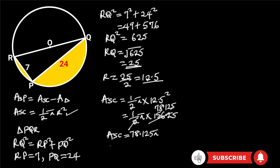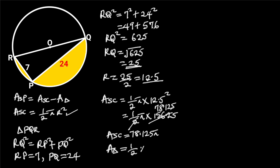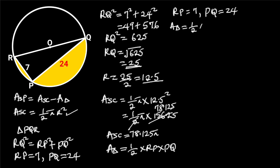Next, let's find the area of triangle PQR. The area of triangle PQR is equal to one-half times RP times PQ. RP is equal to 7 and PQ is equal to 24. Plugging these values into the formula gives one-half times 7 times 24. 24 divided by 2 is 12, so we get 7 times 12, which is equal to 84 square units.